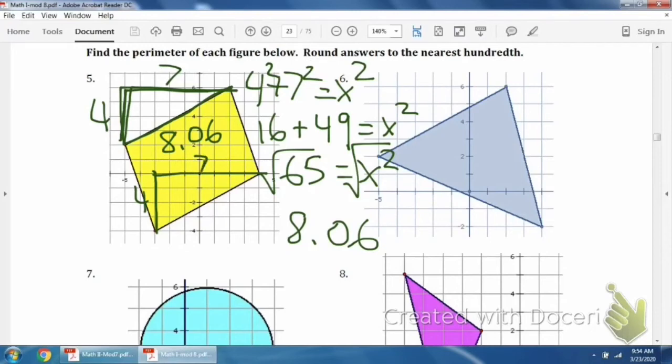So those two legs are the same exact thing. These triangles are exactly the same, so we don't have to do it again. We know both of those are eight point oh six.